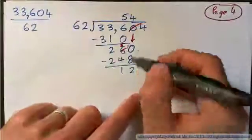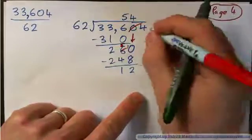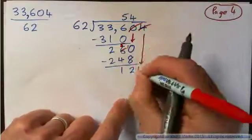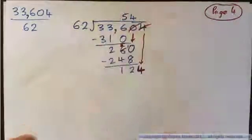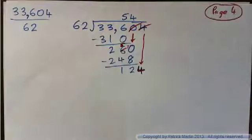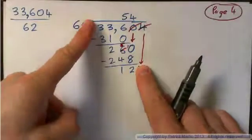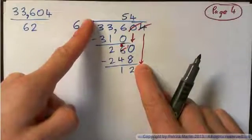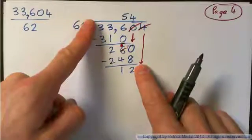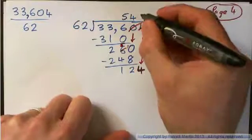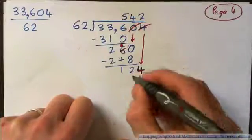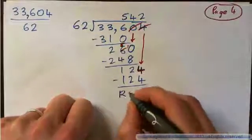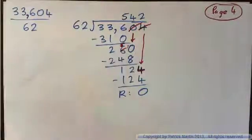Bring down the 4 and we get 124. 62 into 124 is like 6 into 12 — that gives 2. 2 times 2 is 4, 2 times 6 is 12. Subtract and we get remainder 0. The remainder on the problems in this video will be 0.